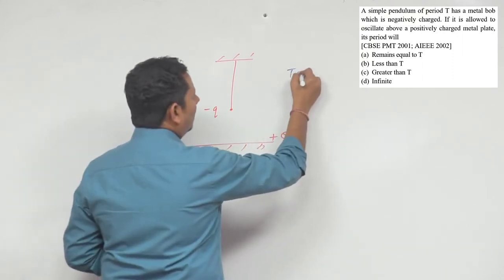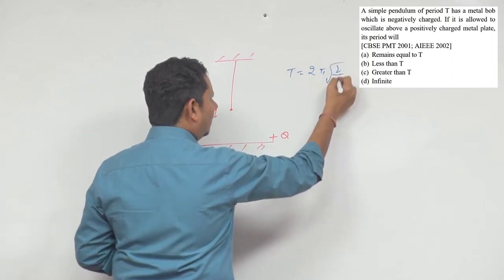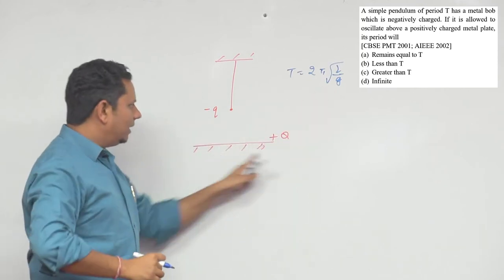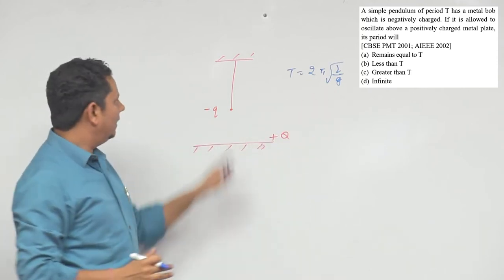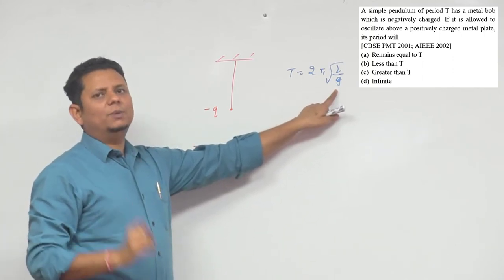If there were no metal plate, the time period would be 2π√(L/g), with effective acceleration due to gravity. Now, because we have a metal plate added, and there's a force of attraction between the two, the effective g value will change.